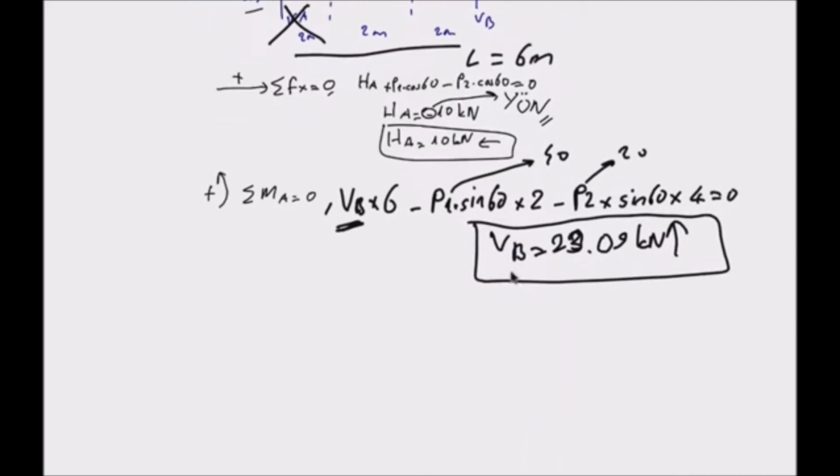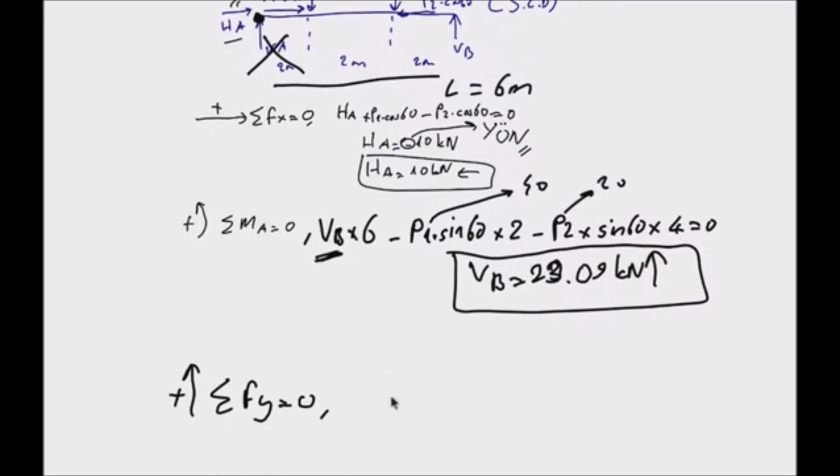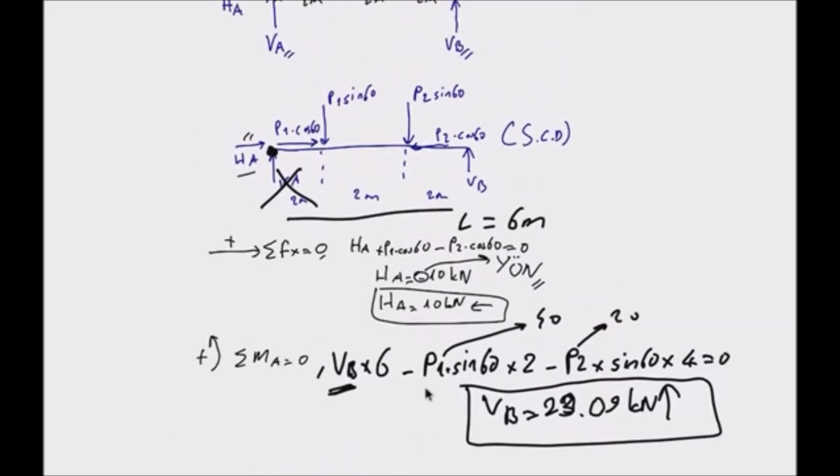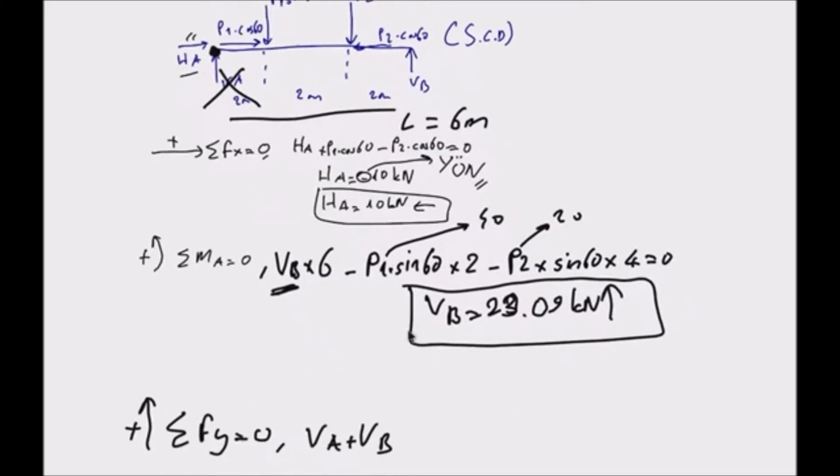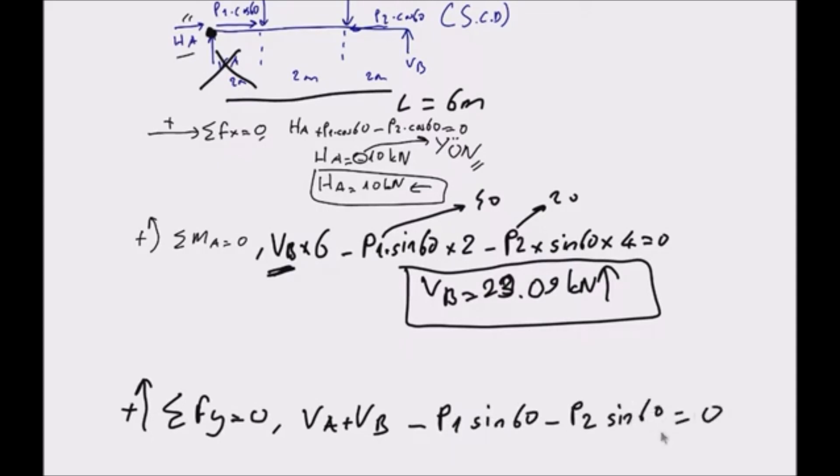The last of the three equations is the total FY. When we solve this equation, the problem will be complete. Total FY is zero. I accept the positive side upwards. VA plus VB minus P1 times sin 60 minus P2 times sin 60 is zero. When we calculate, VA is 28.87 kN in the upward direction.